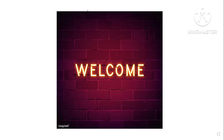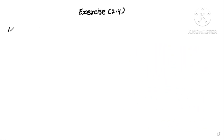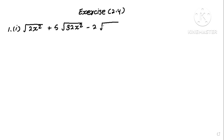If you want to learn more about exercise 2.4, you will be able to learn more about it. So number one is to simplify the following: 2a squared plus 5 square root of 32a squared minus 2 into square root of 98a squared.